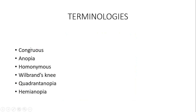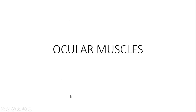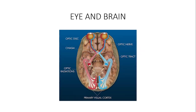Before I finish I'll also let you know certain terms: what is congruous, what is anopia, what is homonymous, what is Wilbrand's knee, quadrant anopia, and hemianopia.